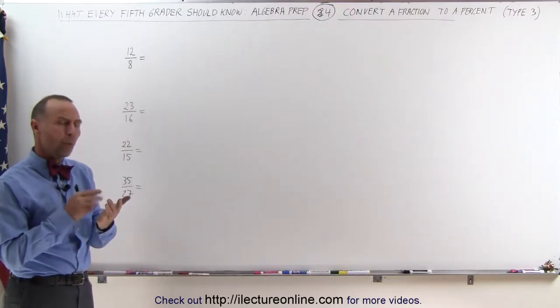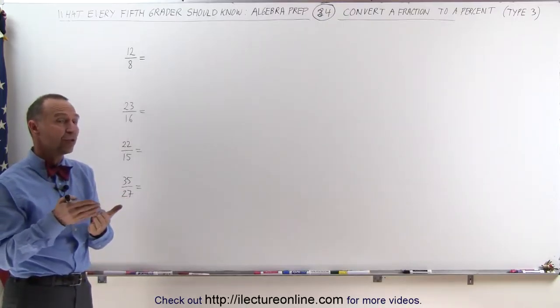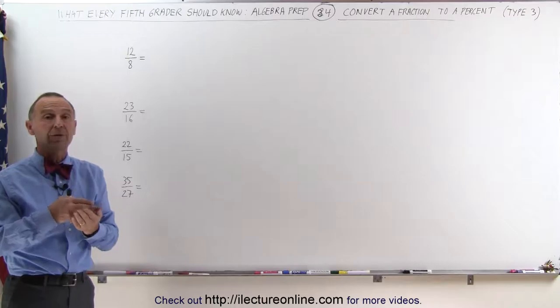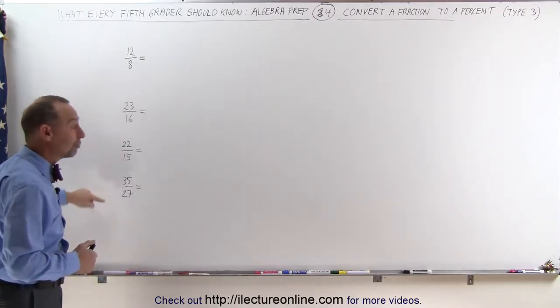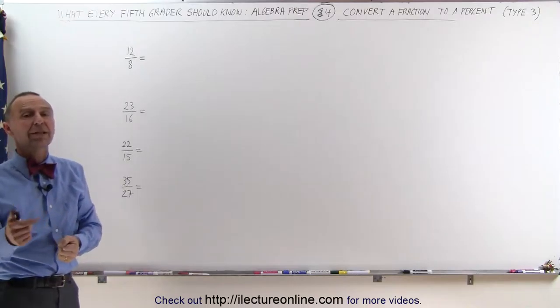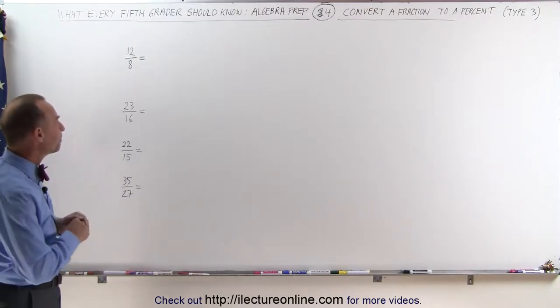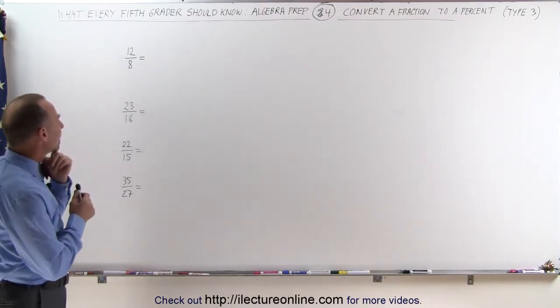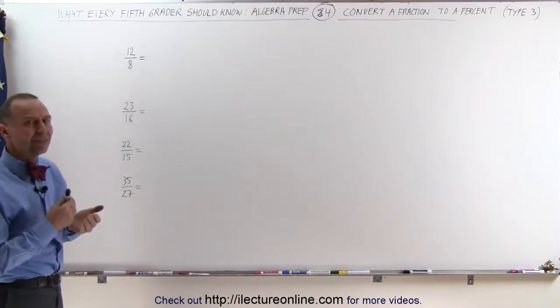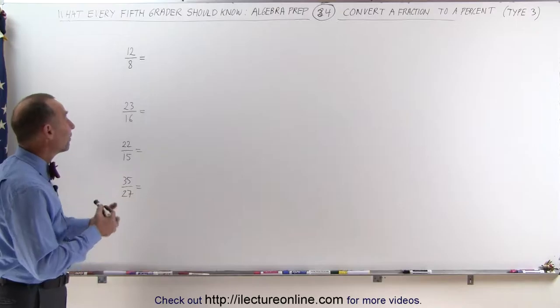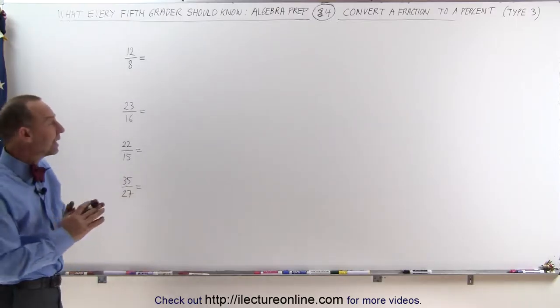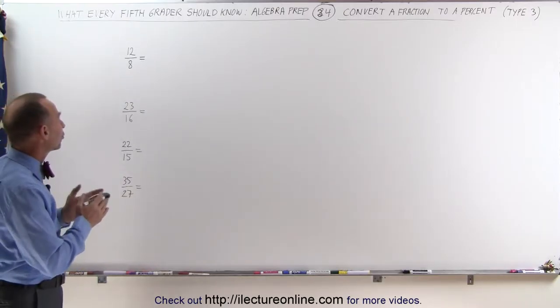Well, let's see here. 1 is equal to 100%, which means that anything bigger than 1 must be bigger than 100%. That means the answers to every one of these four fractions must be bigger than 100%. All right, the next thing we should do is see if we can simplify the fraction. Can the numerator and the denominator be divided by the same number? In other words, make it into a smaller looking fraction with smaller numbers.